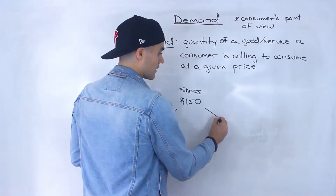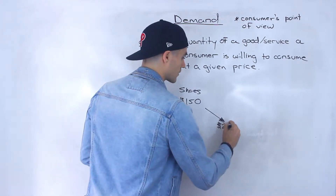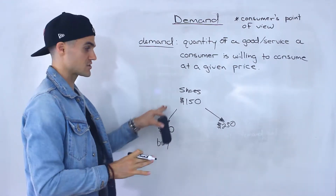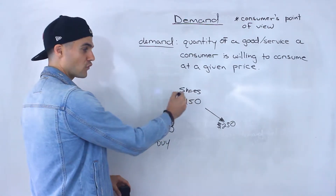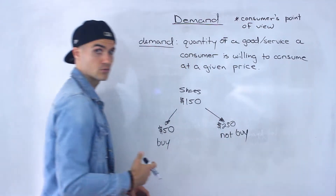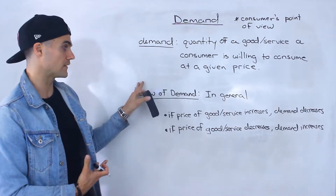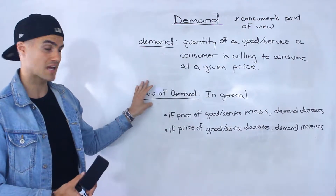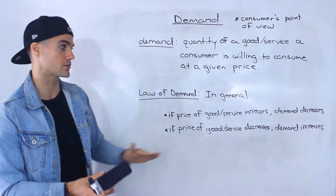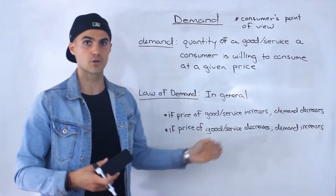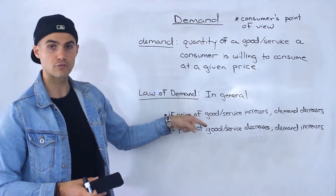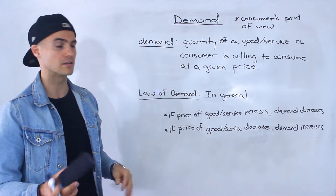But what if the price increased? Let's say these shoes went up to $250. You were just about to buy them at $150 but weren't fully sure yet, so if they increase to $250, you're definitely not going to buy them. From that example, we can introduce the law of demand. In general, if the price of a good or service increases — like those shoes increasing to $250 — then the demand for that good or service decreases. If the price decreases, like those shoes going to $50, then demand increases and you're more willing to buy.